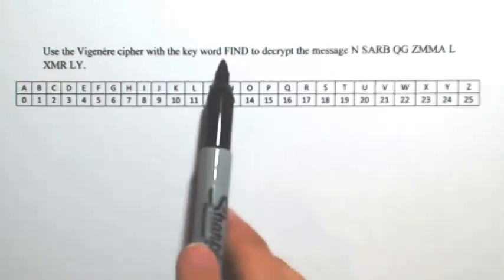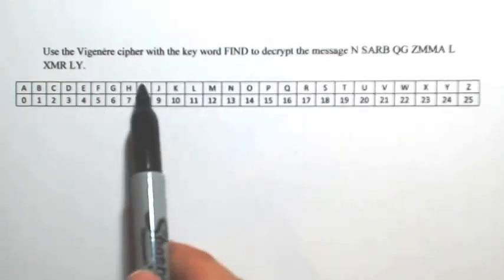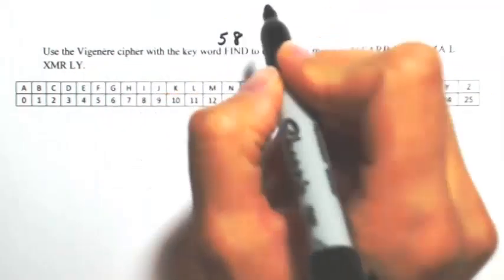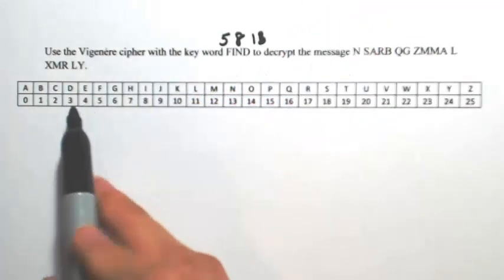So within this list, I'm going to list out what each letter is worth. F is 5, I is 8, N is 13, and D is 3.